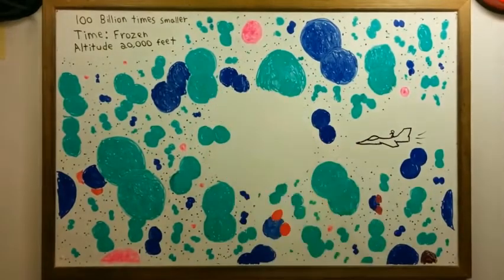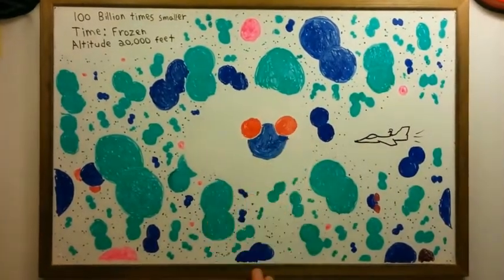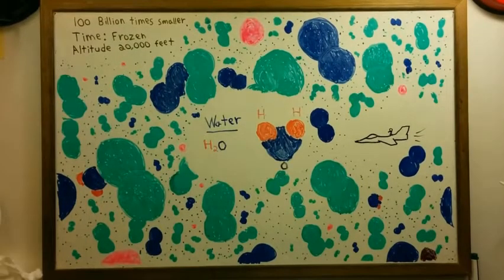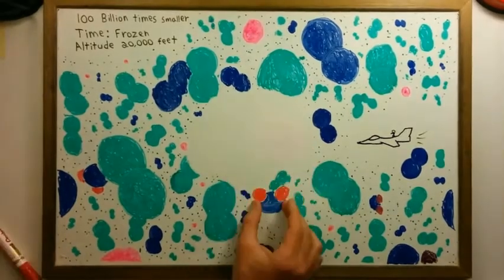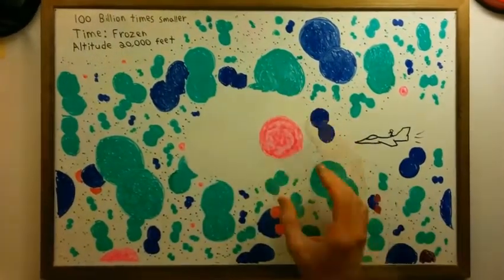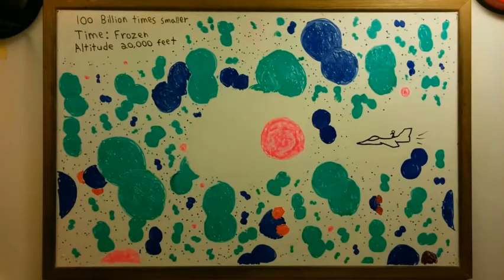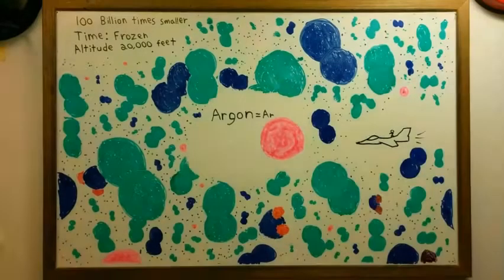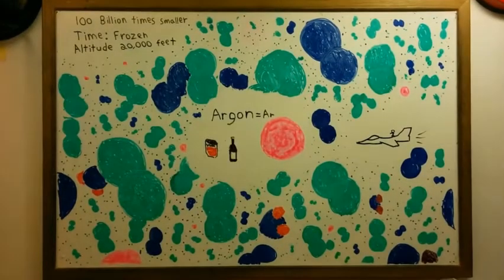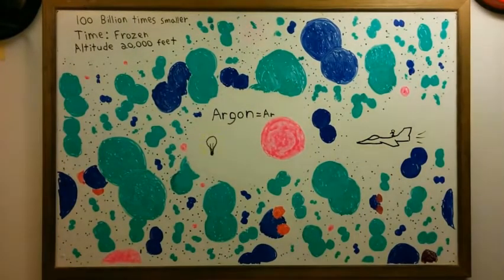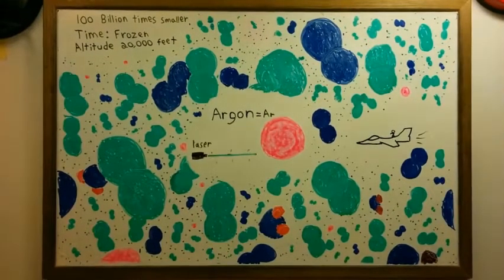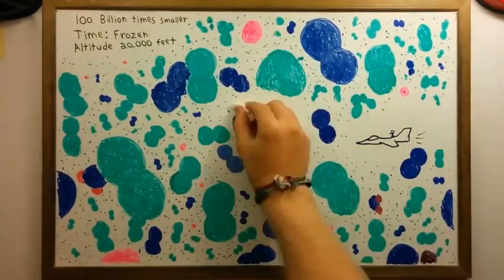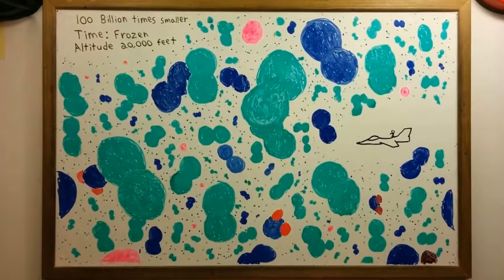This little guy is called H2O — water. There's so much to say about water that we'll leave it for another video. This little pink guy is called Argon. It makes up about 1% of all the air around us, about the same amount as water. It's very useful in keeping certain foods and wines fresh, also used in regular and fluorescent lighting, and even in lasers. There are still small amounts of other gases, like carbon dioxide.